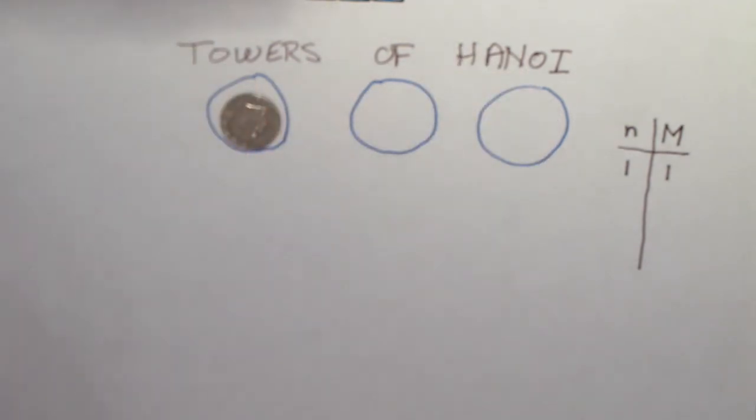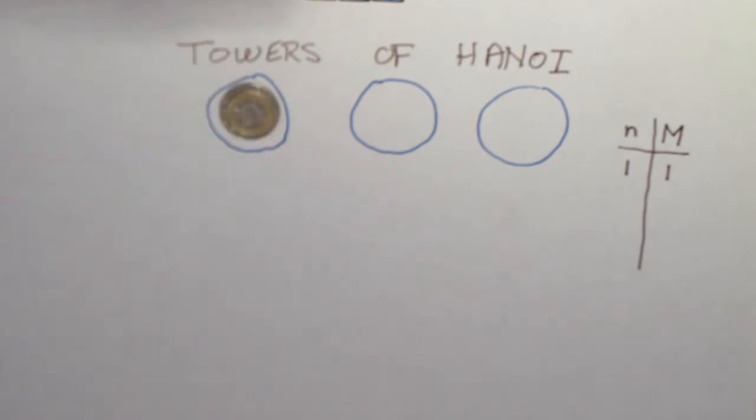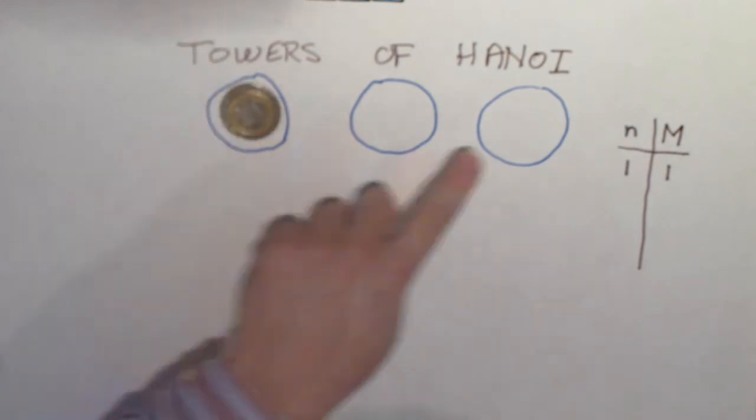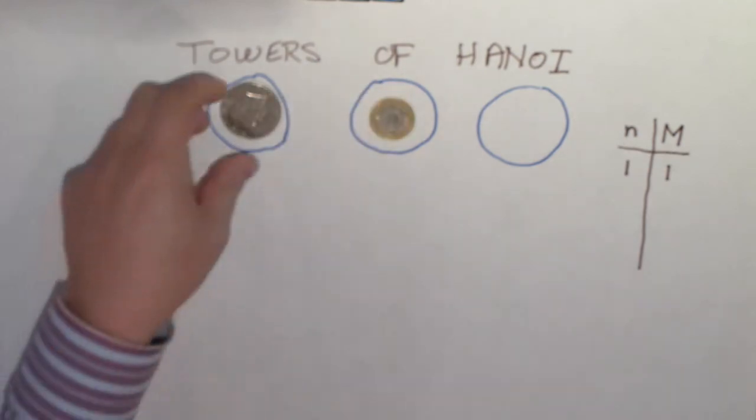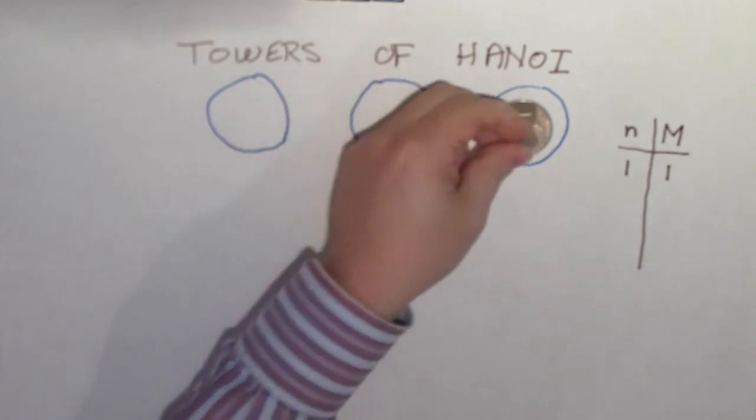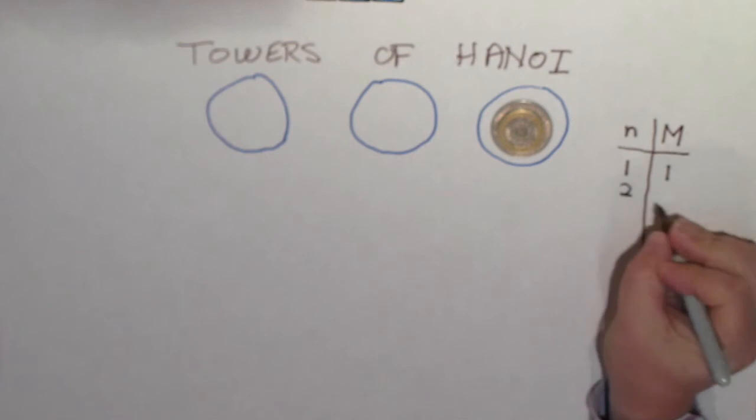Reset the puzzle, step it up to two coins. So let me see here, I want to end up with a big coin over here, so I better put this coin there, so that's one move. Then I can put the big coin there, and then I can put the smaller coin there. So two coins, three moves.